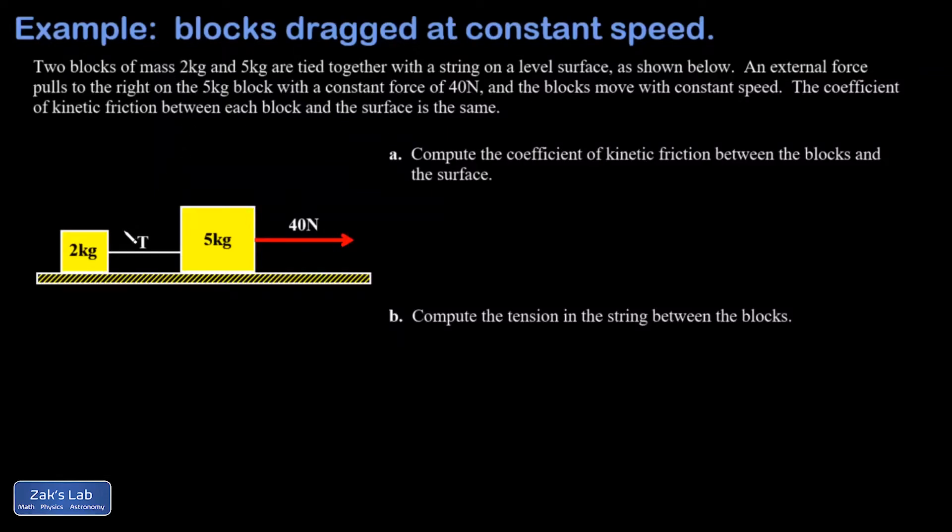In this video we're given two blocks tied together, one with a mass of 2 kilograms and one with a mass of 5 kilograms on a level surface. We have an external force of 40 newtons pulling to the right on the 5 kilogram block. A key point here is that the blocks are moving with constant speed.